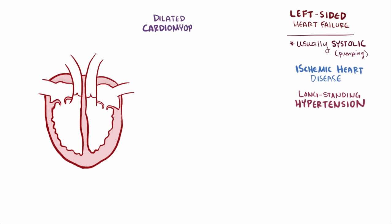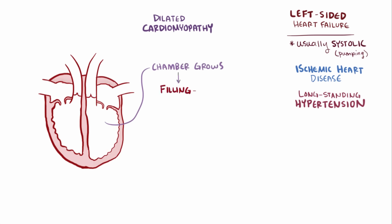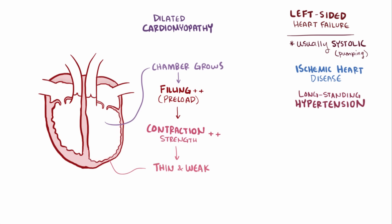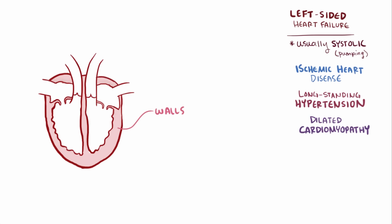Another potential cause is dilated cardiomyopathy, where the heart chamber dilates or grows in size in an attempt to fill up the ventricle with larger volumes of blood — increasing preload — and stretch the muscle walls to increase contraction strength via the Frank-Starling mechanism. Even though this can work for a little while, over time the muscle walls get thinner and weaker, eventually leading to muscles so thinned out that it causes systolic left-sided heart failure. The ventricular walls need to be the right size relative to the chamber for the heart to work effectively.